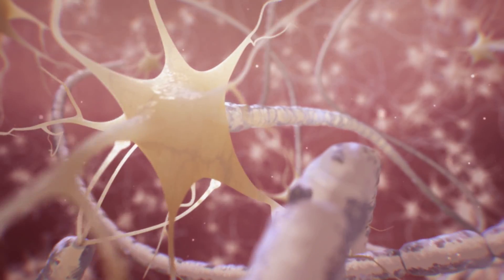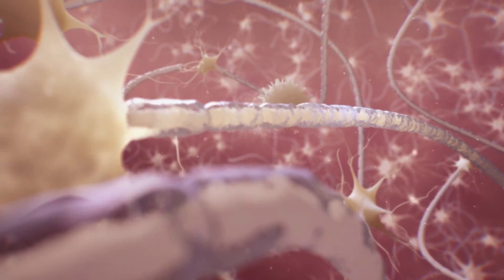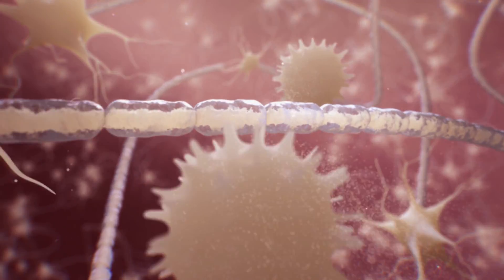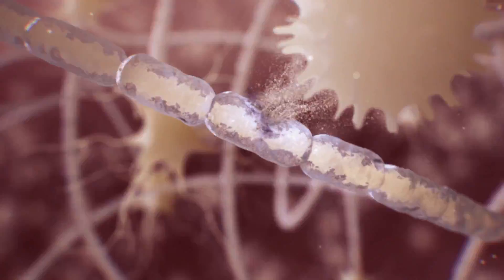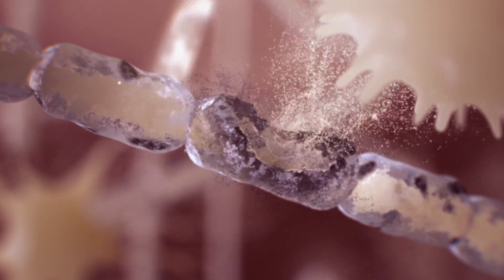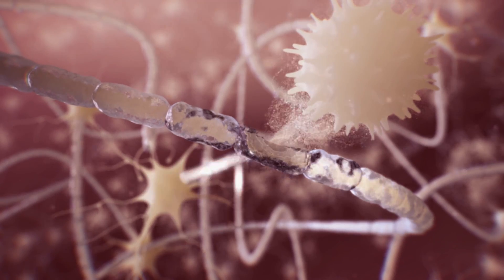The exact cause of MS is unknown, but we do know that something triggers the immune system to attack the brain and spinal cord. The resulting damage to myelin that insulates wire-like nerve fibers is a disruption of signals to and from the brain.